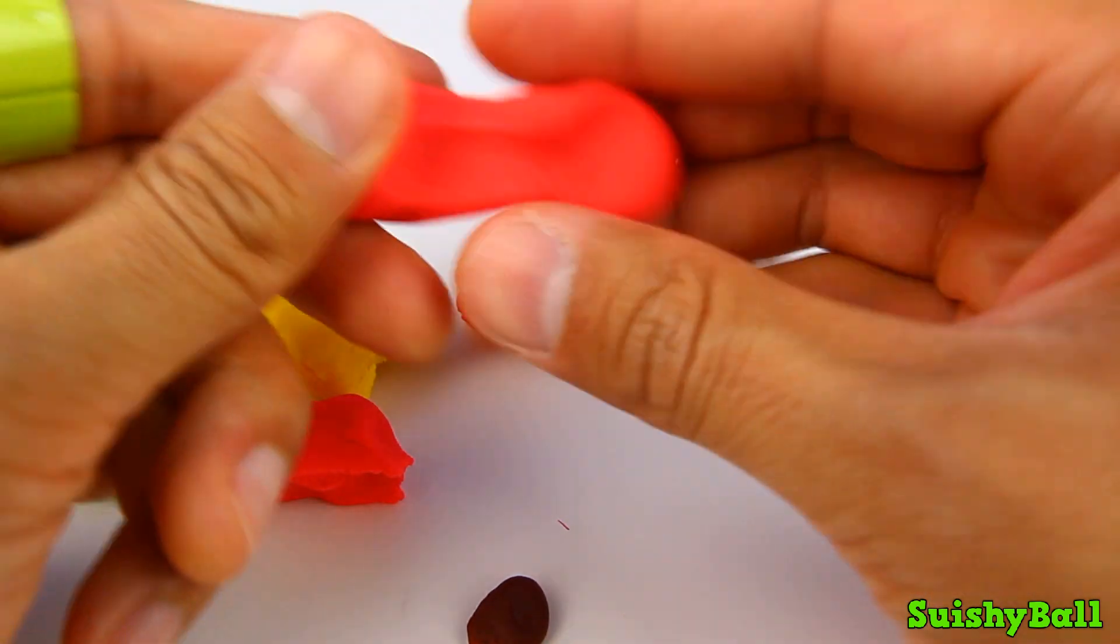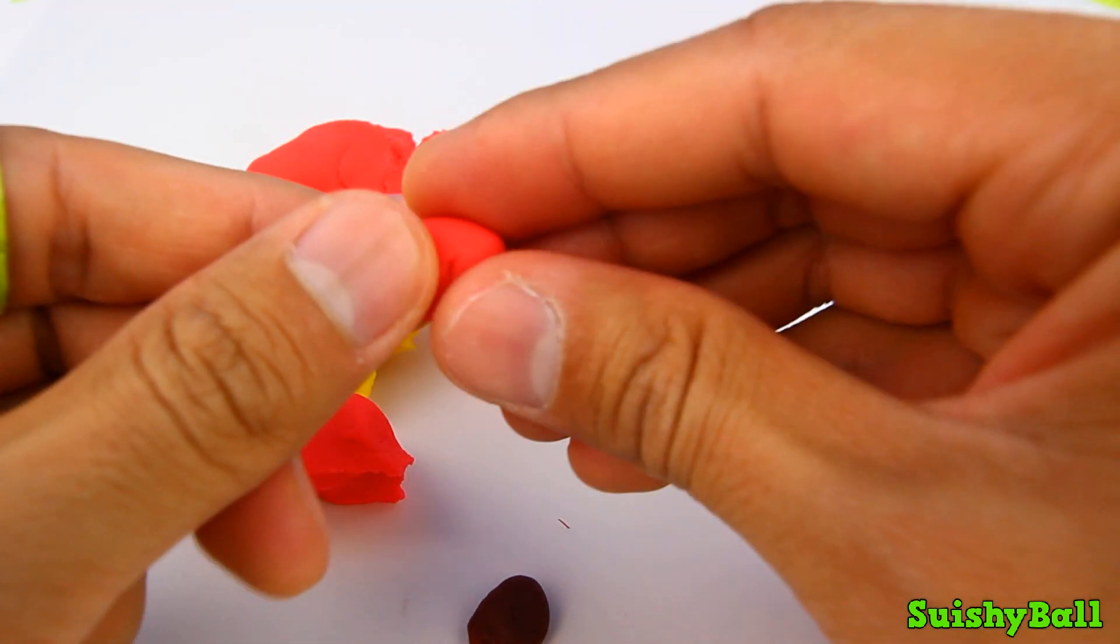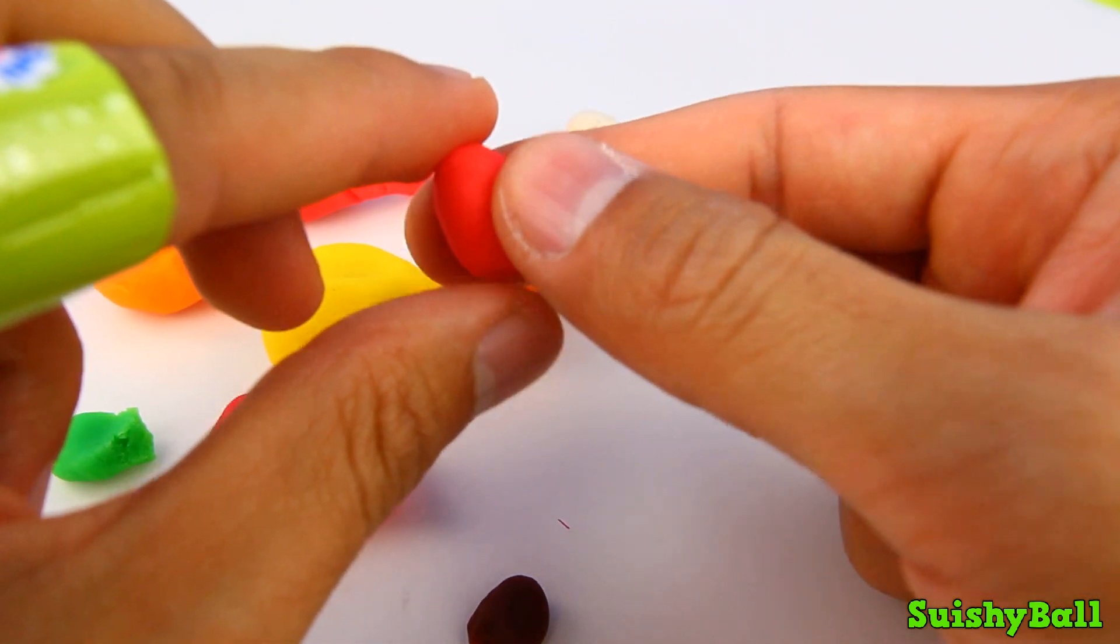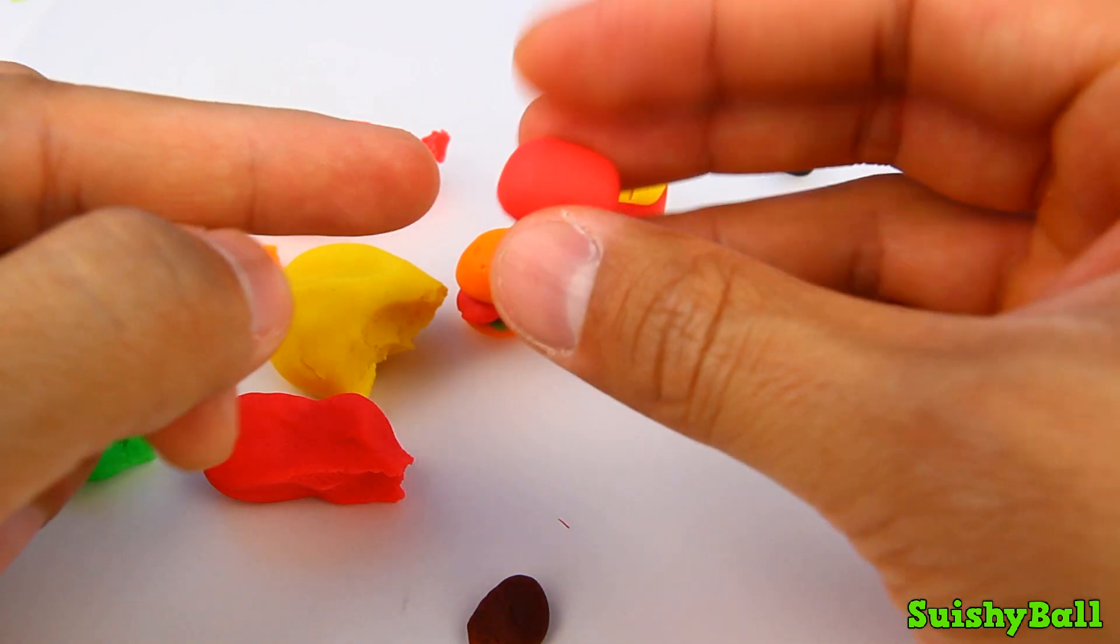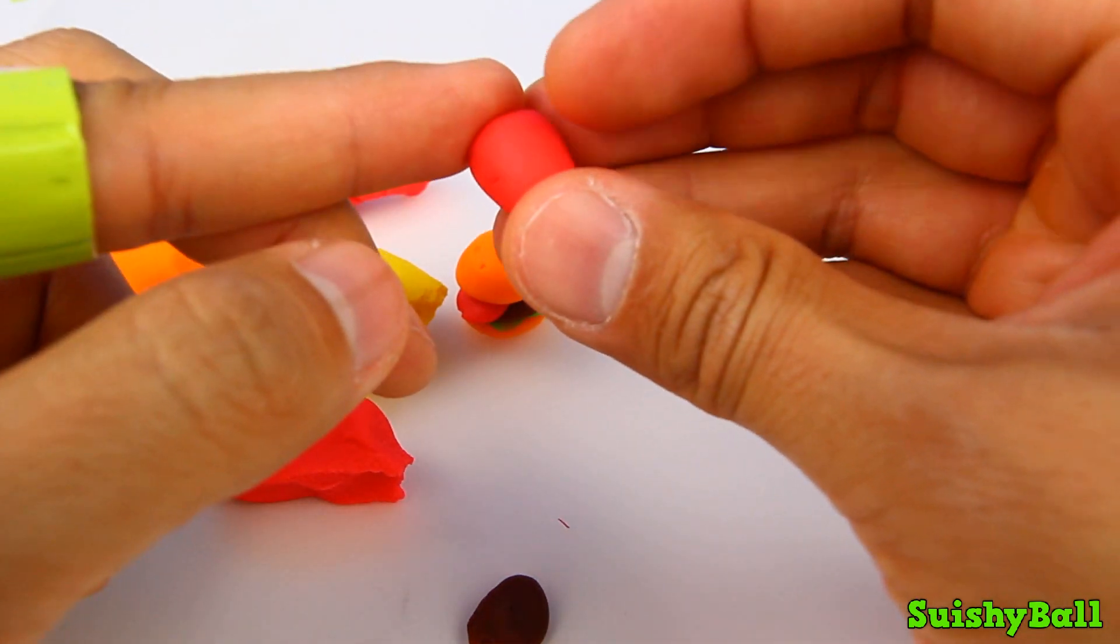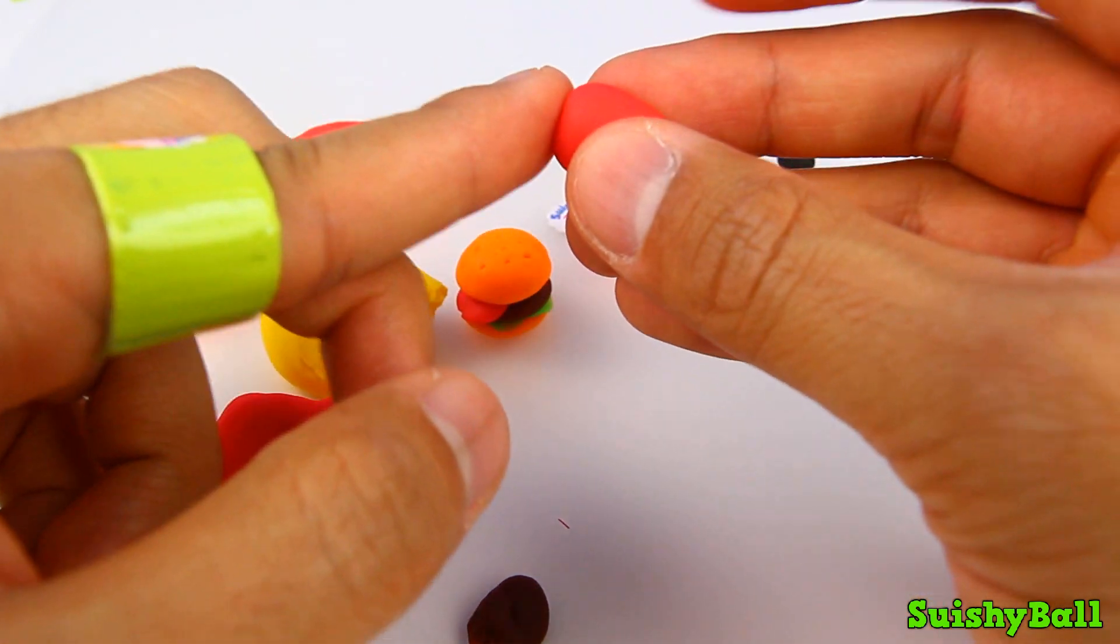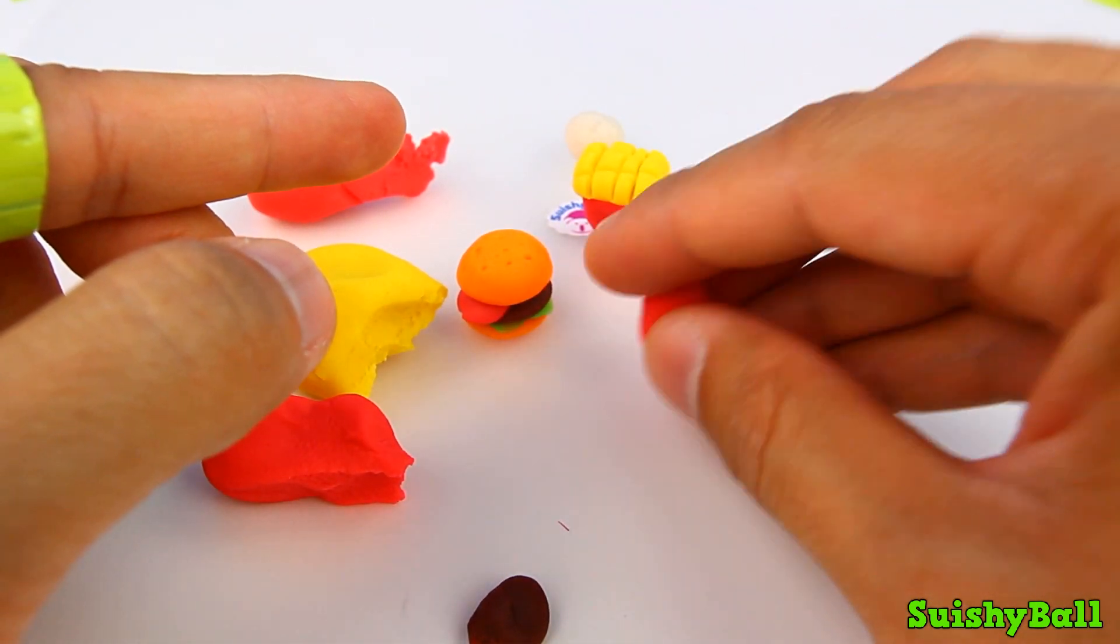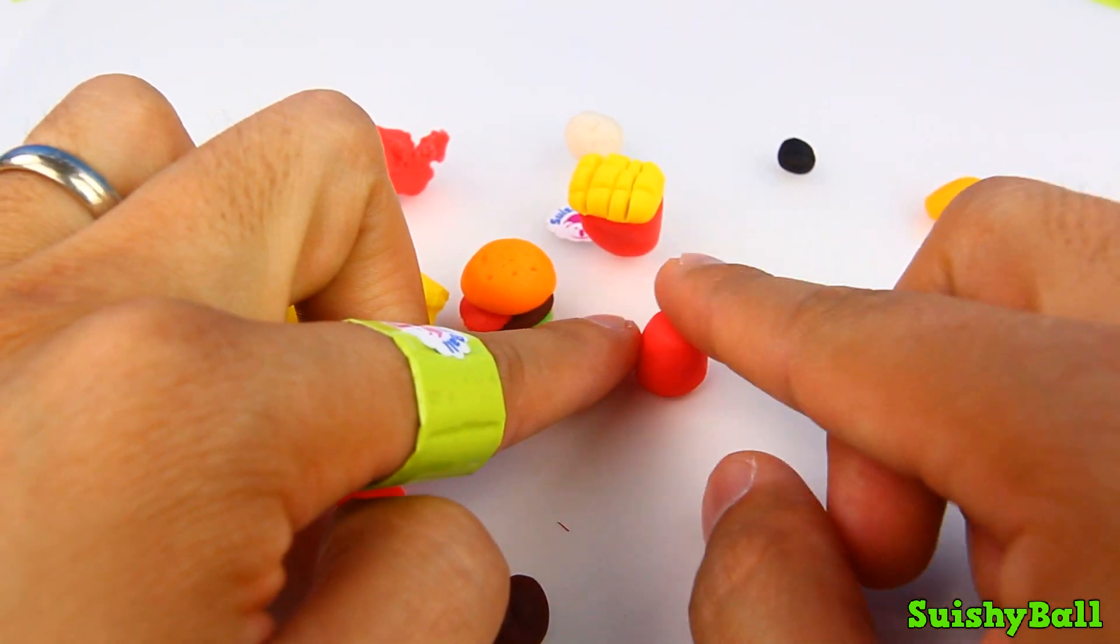And finally the last thing to make is the drink. I'm going to take some of this red play-doh and I'm going to roll out kind of like a cone but with both ends flat.